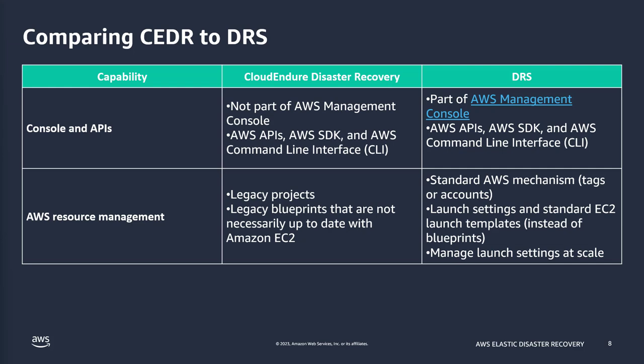Comparing the two services: AWS Elastic Disaster Recovery is directly part of the AWS Management Console and utilizes AWS APIs, SDKs, and the AWS CLI. If you have other workflows in place for AWS services, it's much simpler to implement Elastic Disaster Recovery into those workflows. We've also moved away from the legacy projects and blueprints in CloudEndure to the AWS standard mechanism of tagging and accounts. Launch settings are now handled through EC2 launch templates, as opposed to the proprietary blueprint system used previously.